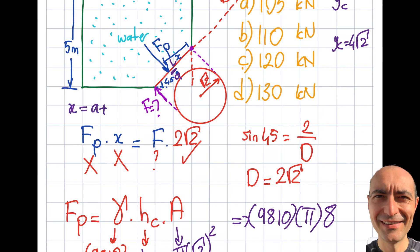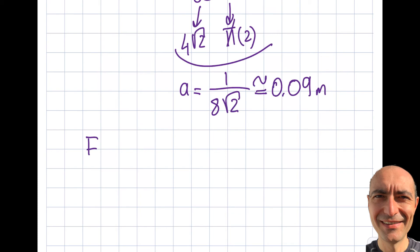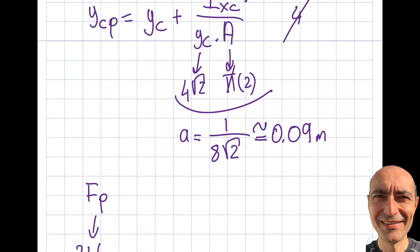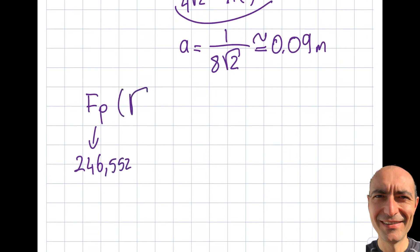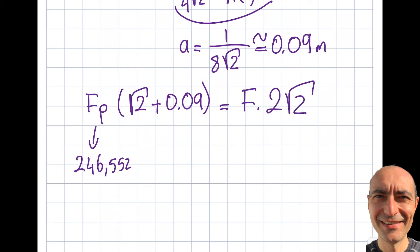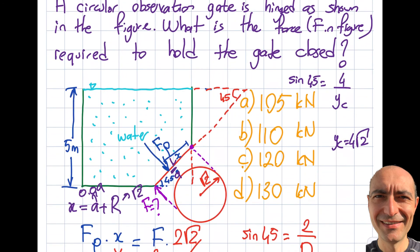So x equals a plus r, which is 0.09 plus √2. Plugging everything into the moment equation: 246,552 × (√2 + 0.09) = F × 2√2. Solving gives F = 130,946 newtons — about 131,000 newtons. Looking at the answer choices, that corresponds to choice D.